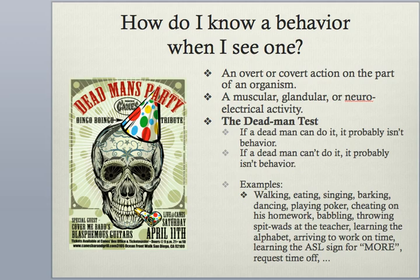Things like sitting — if a dead man can sit, it's not necessarily a behavior. But if you're talking about the act of sitting down, 'I'm going to sit down,' then it would be a behavior. What about thinking? Can a dead man do it? Nope — so it's a behavior. What about feeling? Dead men don't do it, so feeling is a behavior; it's a response. Reasoning — dead men don't do it, so it's a behavior. It doesn't matter if it's internal or external, overt or covert; as long as it's an action that someone does, then it's a behavior. You can always use the dead man's test to find out.